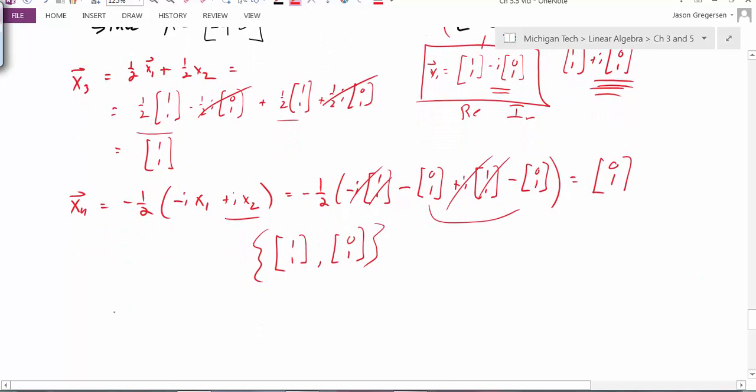So to summarize, if my eigenvector is some real vector plus or minus i times some imaginary vector, the imaginary part of this vector, then take my matrix P and let the first column be the real part and the second column be the imaginary part.